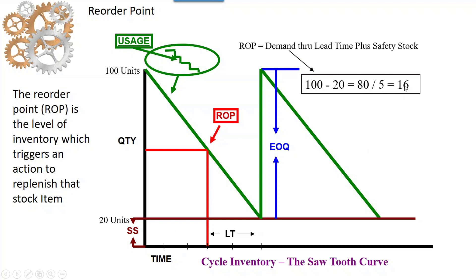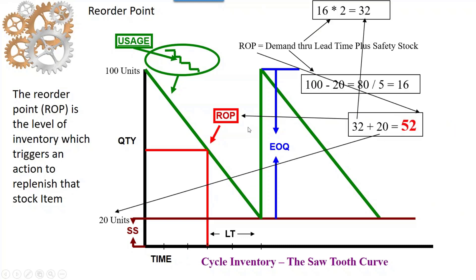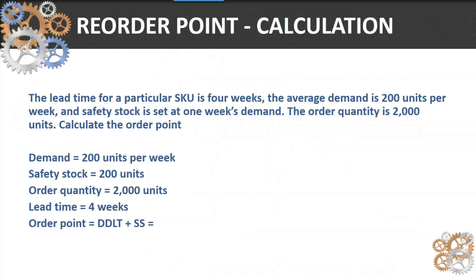The demand through lead time is 16 times 2, or 32. Therefore, the reorder point is the demand through lead time plus safety stock, or 52 units. So when inventory reaches that 52-unit point, we launch an order into the system.